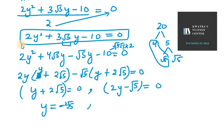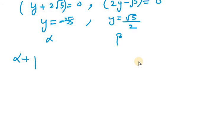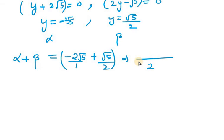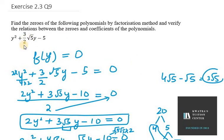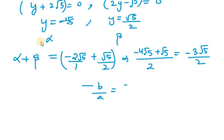So α = -2√5 and β = √5/2. For verification, we find the sum of roots: α + β = -2√5 + √5/2. Taking LCM: (-4√5 + √5)/2 = -3√5/2. From the formula, -b/a = -(3/2√5)/1 = -3√5/2. This matches, so α + β is verified.